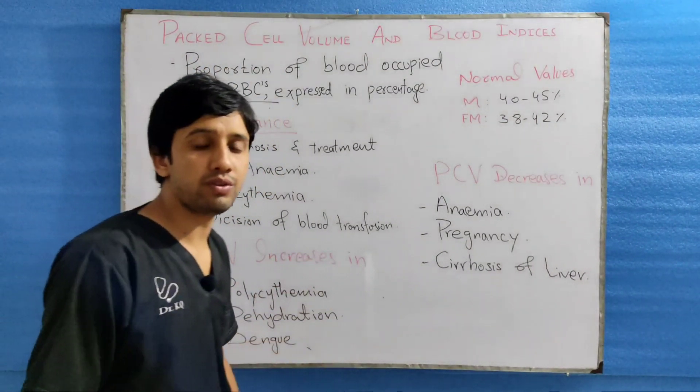The blood indices include: MCV (mean corpuscular volume), MCH, MCHC, and the color index. The first, MCV, is the average volume of a single RBC, expressed in cubic microns. The normal value ranges between 78 to 90 cubic microns. When MCV increases, the cells are called macrocytes; when it decreases, the cells are called microcytes. In pernicious anemia and megaloblastic anemia, the cells are macrocytic — MCV is increased. In iron deficiency anemia, the cells are microcytic and MCV decreases.